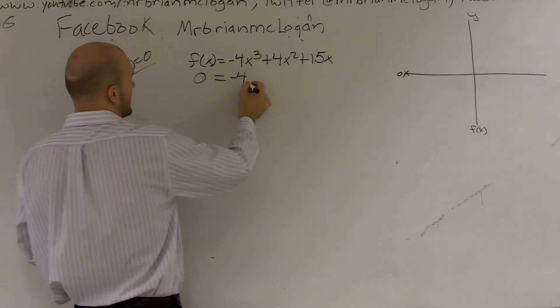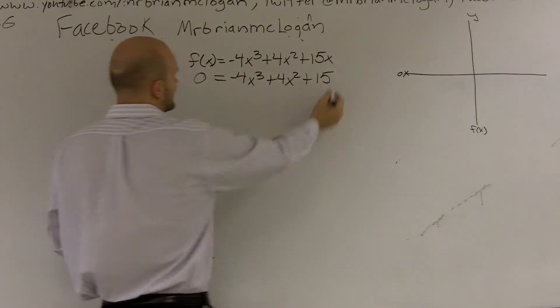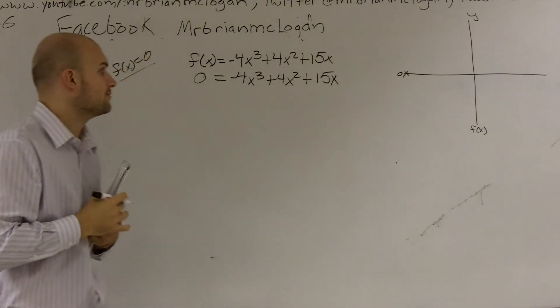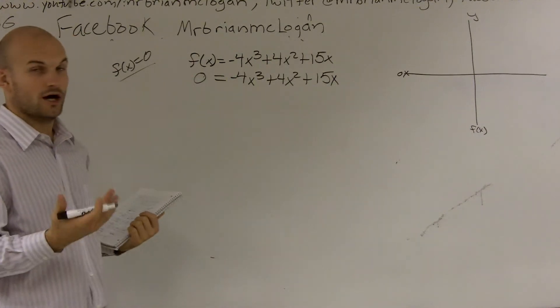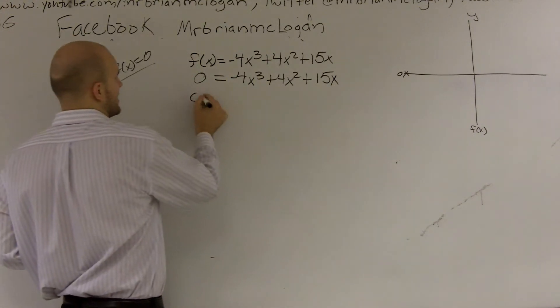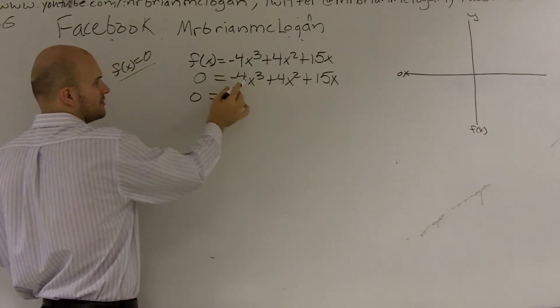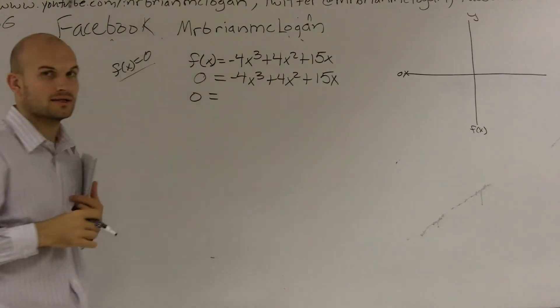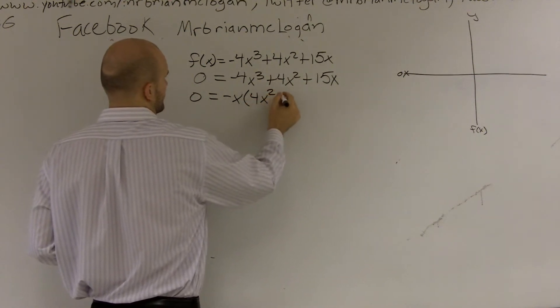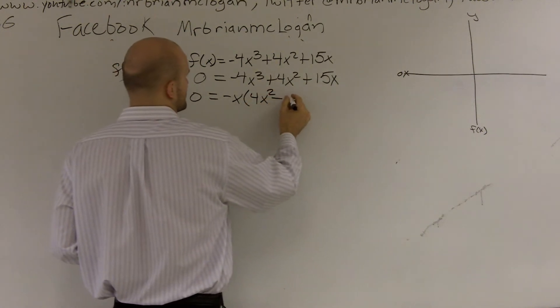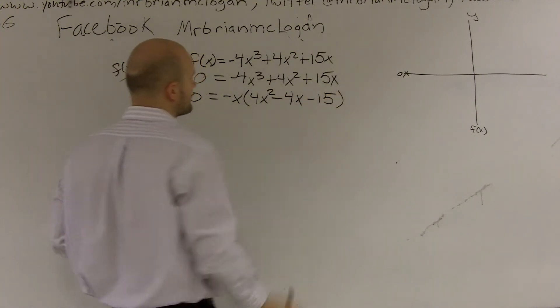So I have negative 4x cubed plus 4x squared plus 15x. First thing I want to do is see what can I take out of all these. Can I factor this in any form? And I always look, and they all share an x. So I'll see if I can take out an x. I might notice that's a negative. I don't ever want to have, I usually don't like dealing with my negatives in front of my leading term. So I'm going to factor out a negative x. Negative. So just make sure every sign is going to change.